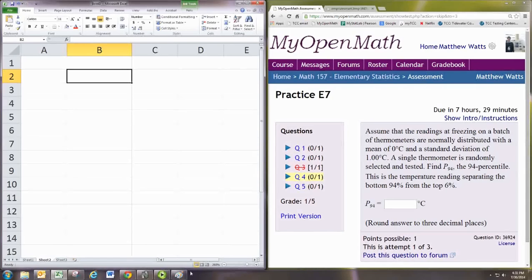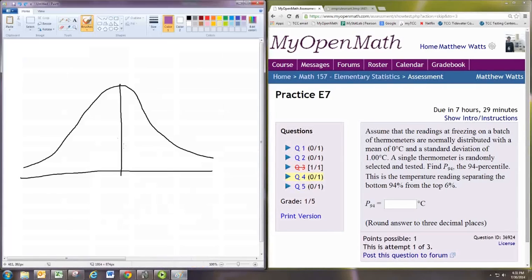We have a picture like this, and our mean can be set to 0. And we'd like to find the 94th percentile. Of course, that's somewhere up here. And you want to know where that is.